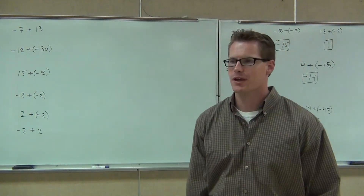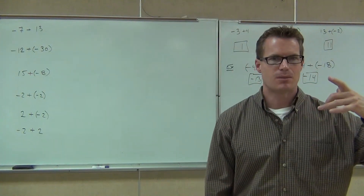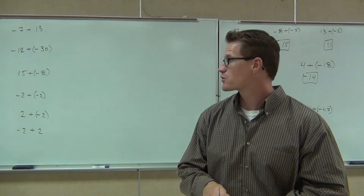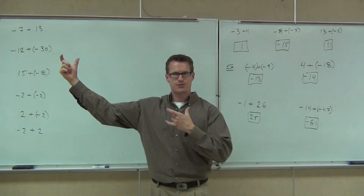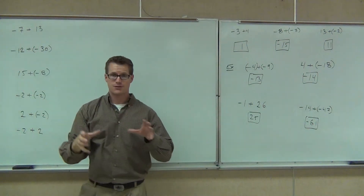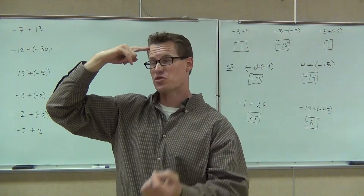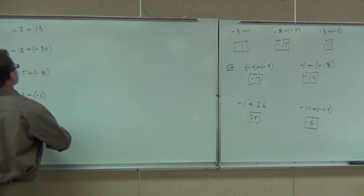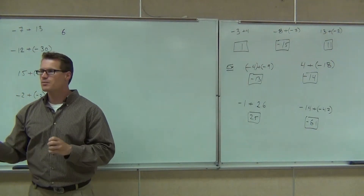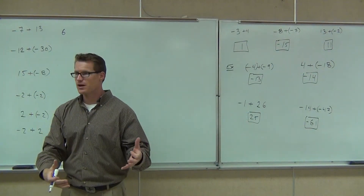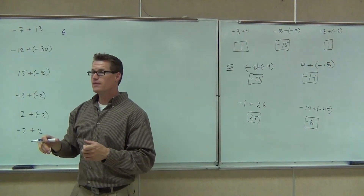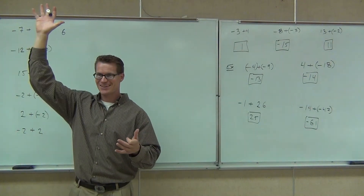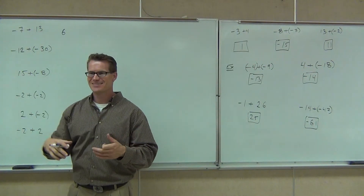All right, so the first one — I'm going to model how I would think about these things, just so you hear the process. I'm going to verbalize my thinking. First thing we check: does it have a plus? Yes — that tells me to use addition rules. Next, I'm looking at the signs of the numbers. I see different signs — a negative and a positive — so that means I need to subtract. I'm doing 13 minus 7, a typical subtraction, so I get 6. The bigger number is 13, which was positive, so my answer is positive 6.